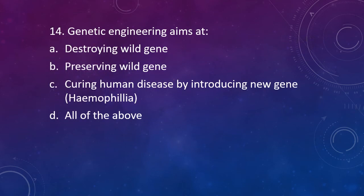Question 14: Genetic engineering aims at? Option A: Destroying wild gene. Option B: Preserving wild gene. Option C: Curing human diseases by introducing new genes. Option D: All of the above. The correct answer is Option C — with genetic engineering, we can cure human diseases by introducing new genes in place of genes that have been mutated.